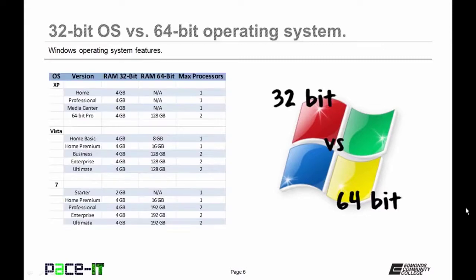Here's a slide that shows how much RAM each version of Windows will address, and also how many processors. The Ultimate and Pro versions are the ones that are best if you want a powerhouse system.